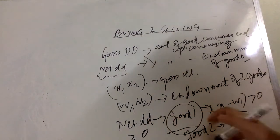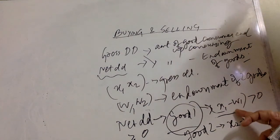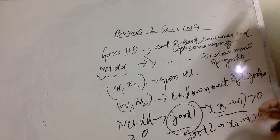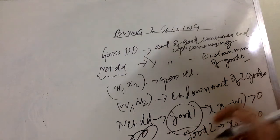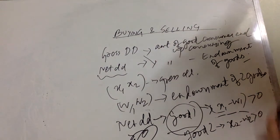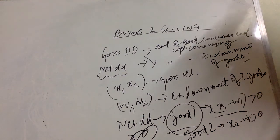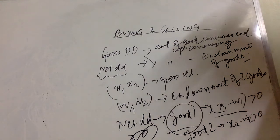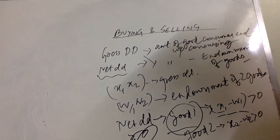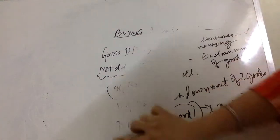If net demand is positive, you're demanding more than your endowment. If net demand is negative, x1 is less than w1, meaning endowment exceeds consumption. When you have excess endowment beyond your consumption, that extra amount is supplied to the market — we say this person is a net supplier of that good.